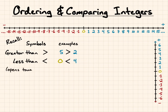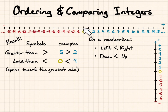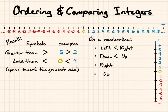One way of looking at this symbol is that it opens towards the greatest value. On a number line, left and down is always going to be less than right or up. So the values going to the left are always going to be less than the values going to the right. Or on a vertical number line, the values going down are always going to be less than the values going up. Also, the right or up values are always going to be greater than the values going left or down.